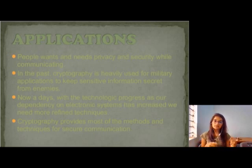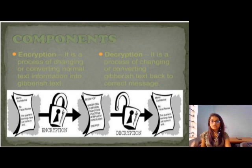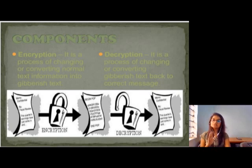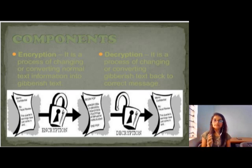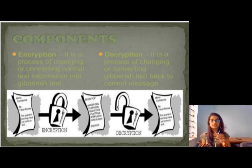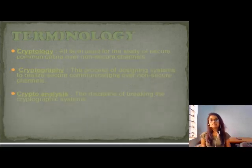Next is components. Components are two: encryption and decryption. Encryption is converting our message from our normal language into a coded form, which is only sent to their intended recipient. The second is decryption — in decryption, the person who receives the encrypted message will open it and it will be converted back into normal language.